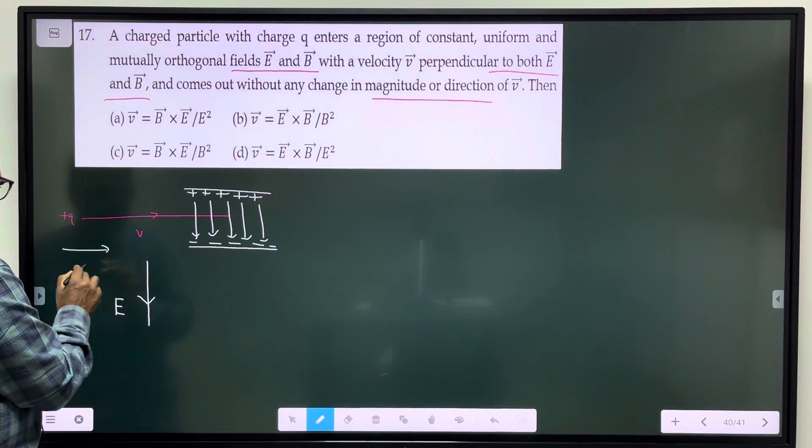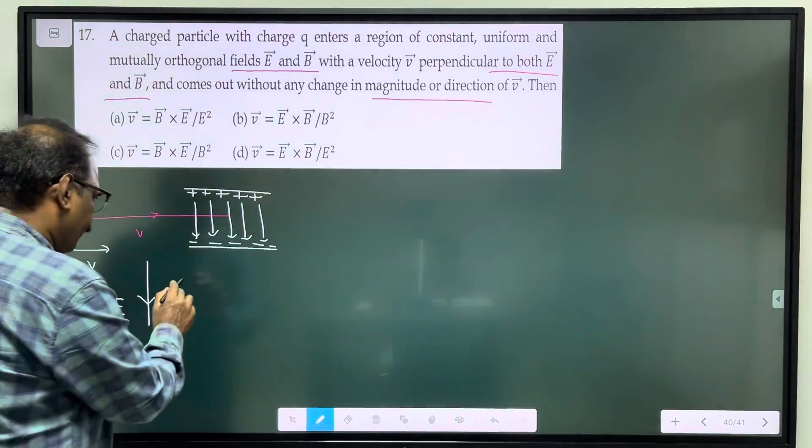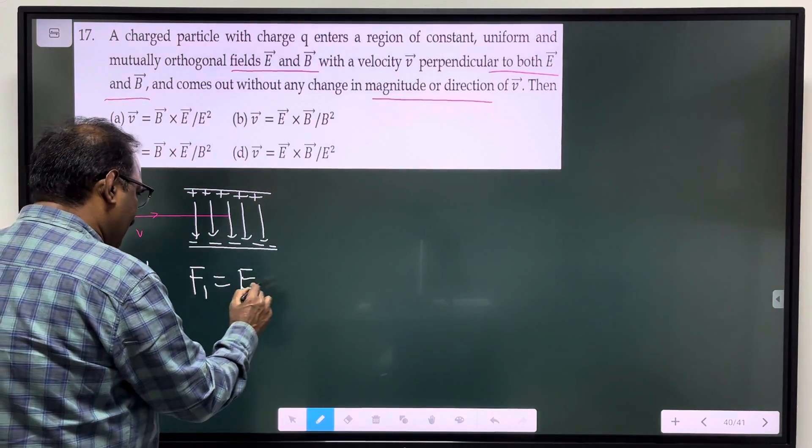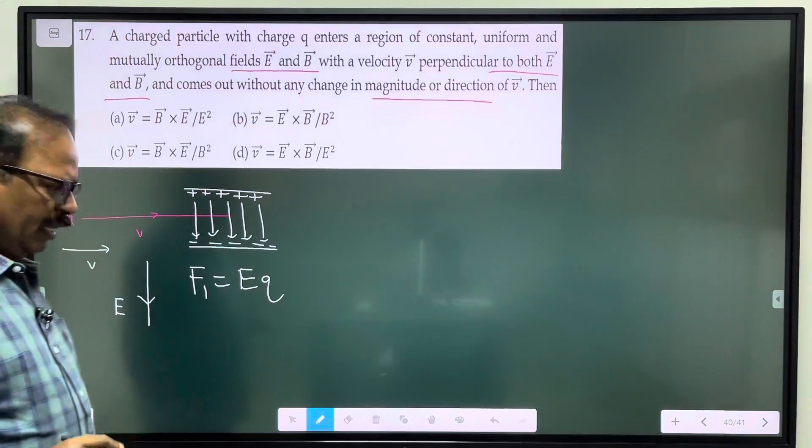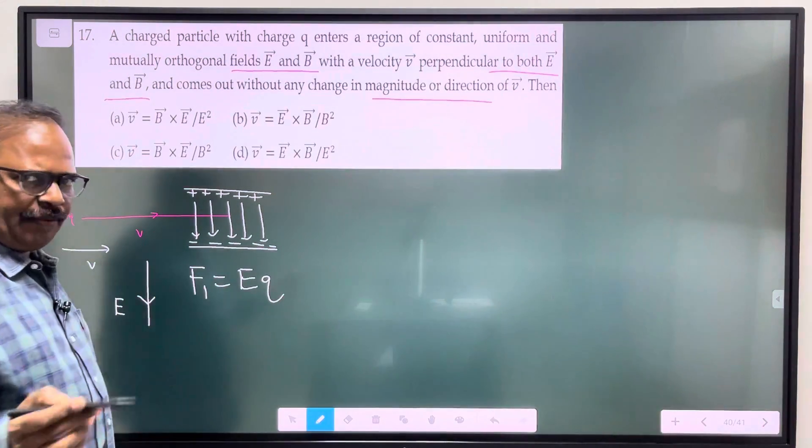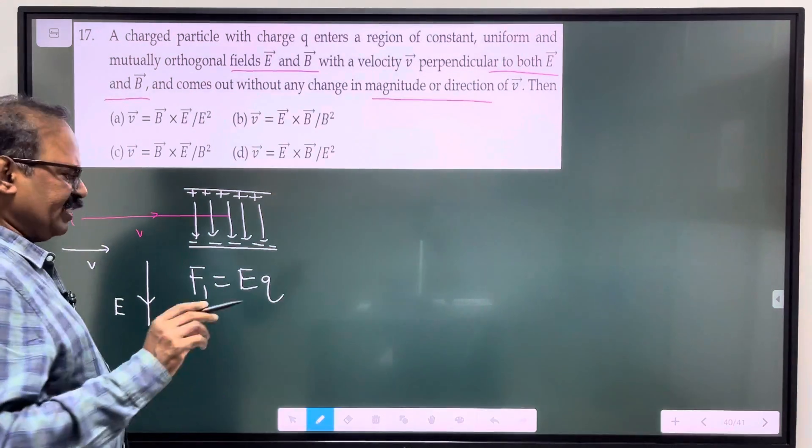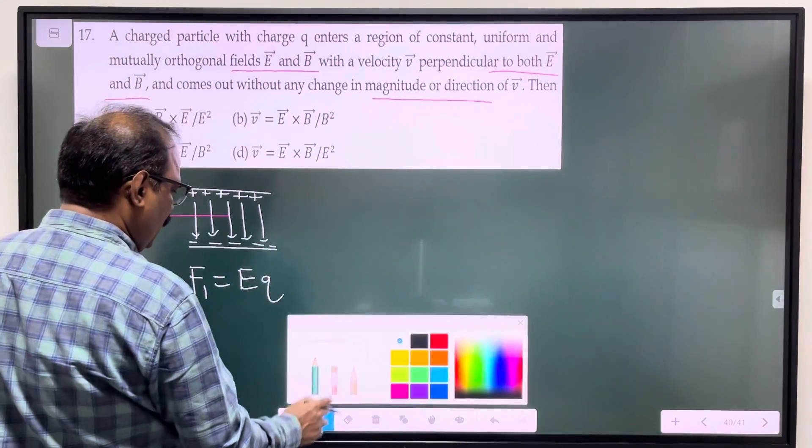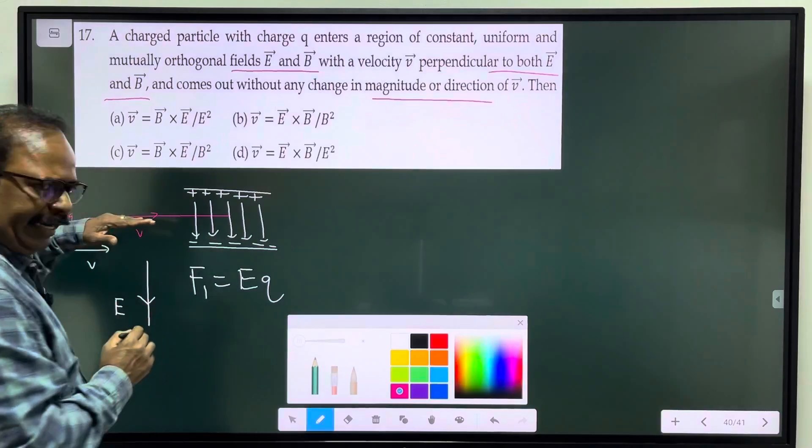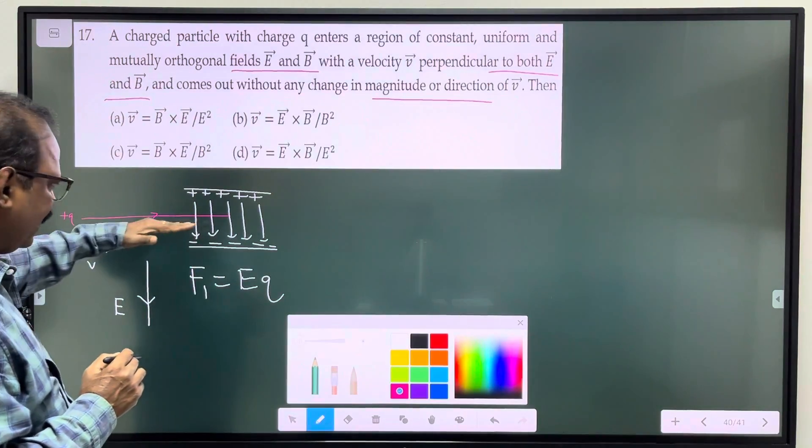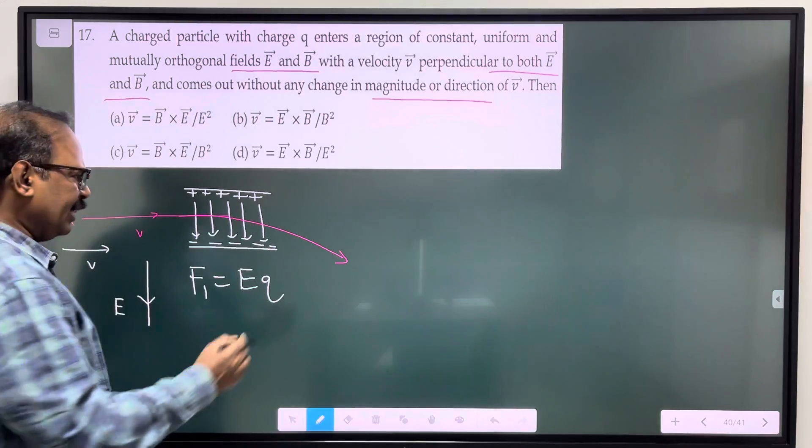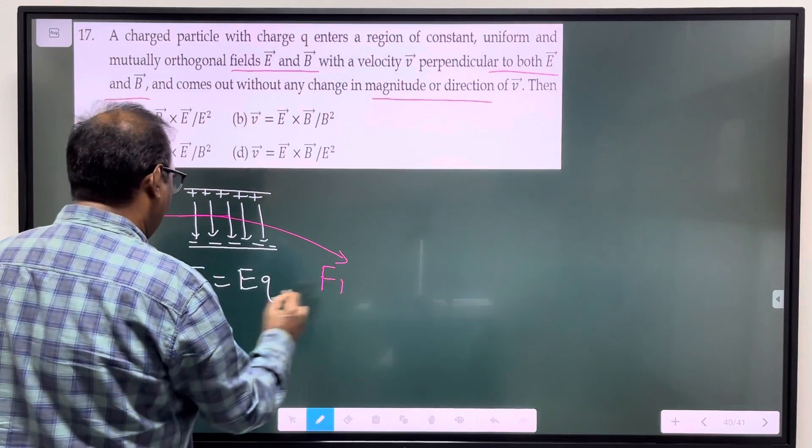The electric lines go from positive to negative. The charge q comes in the direction of the electric field. The velocity is like this, so there is a force acting on this charged particle which will be E into q. The force by the electric field doesn't depend on velocity. The force F1 is equal to Eq.